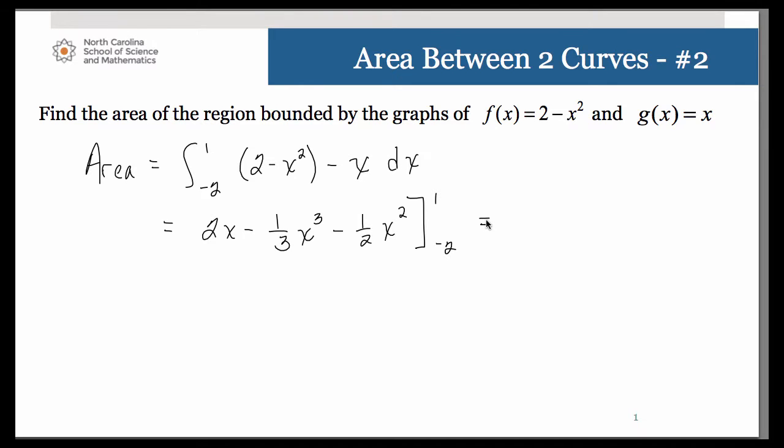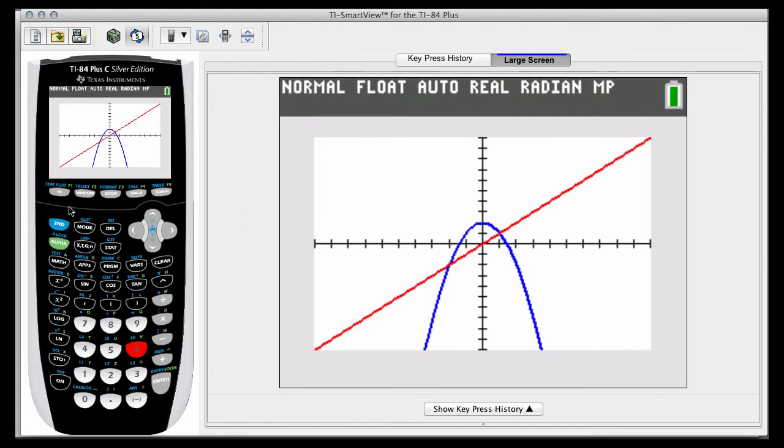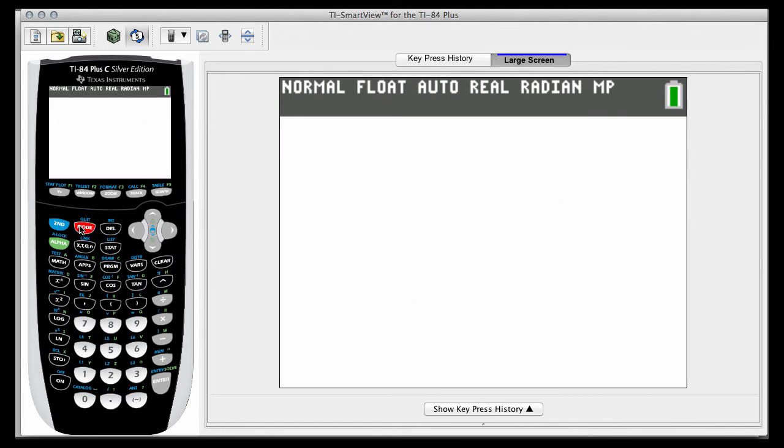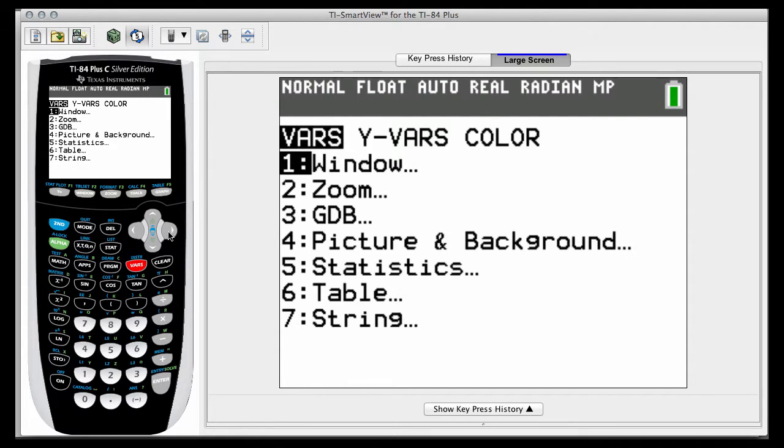So you can do that by hand, and I'm going to go ahead and use function integral on my calculator. So math 9 from negative 2 to 1. So I'm going to do this a little bit faster. I know that my upper curve, the 2 minus x squared, is what I had under y1.